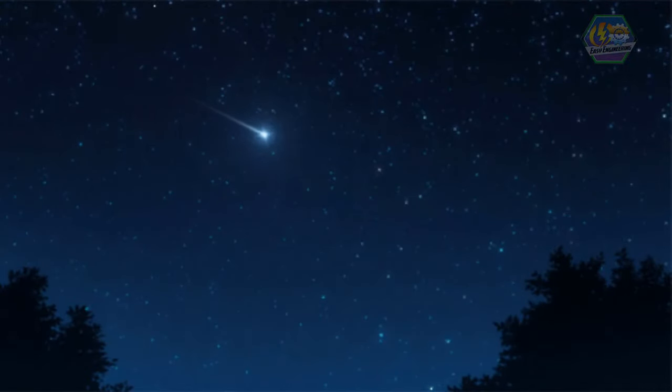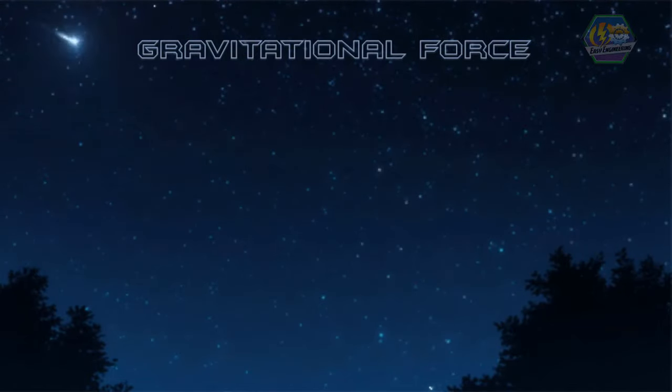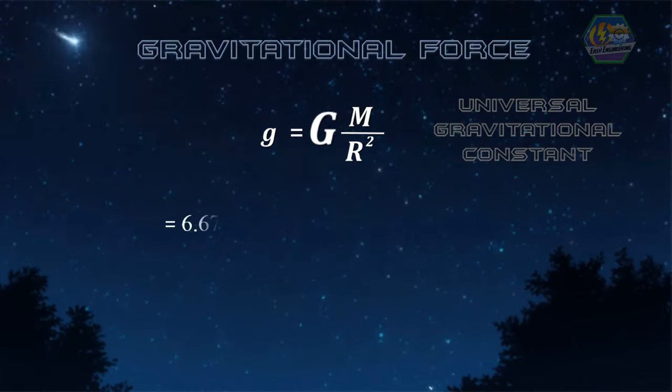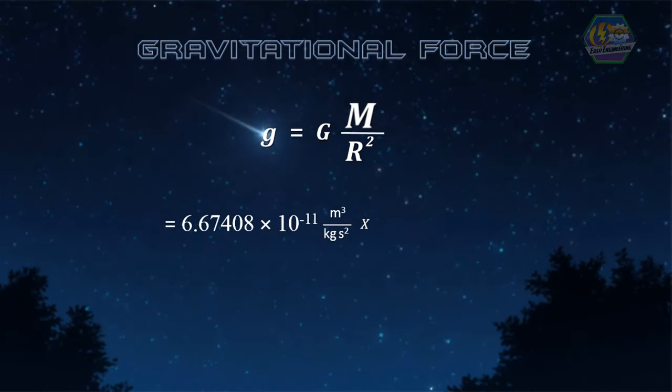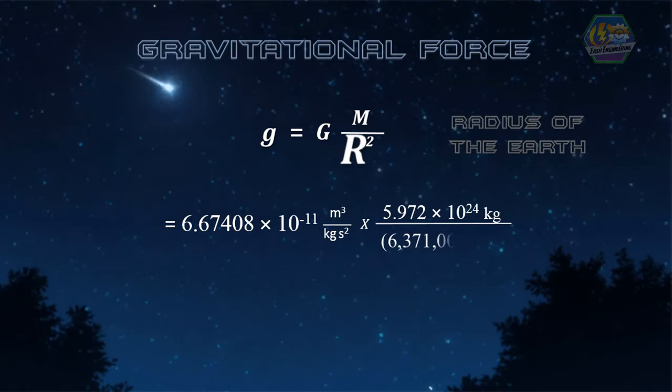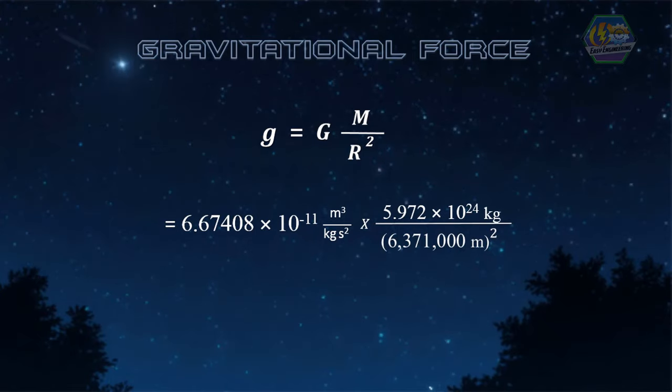In free fall, the free falling object accelerates towards the Earth, and this acceleration is due to gravitational force of the Earth, which is denoted by small letter g. Using a few mathematical equations, capital letter G is the universal gravitational constant, and capital letter M is the mass of Earth, and capital letter R is the radius of the Earth. So substituting the known values, we can get the value of small letter g, which is equal to 9.8 meters per second squared.